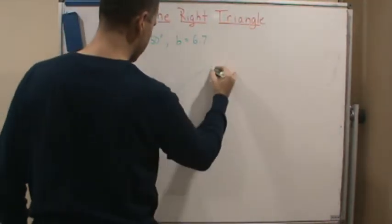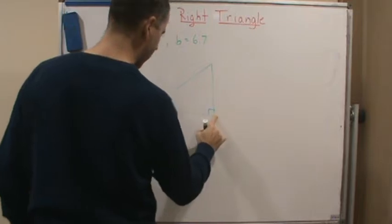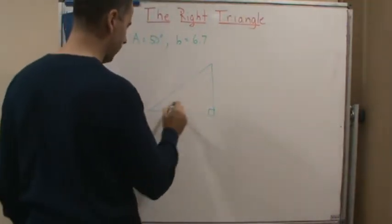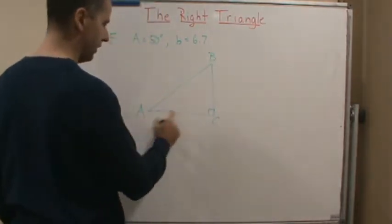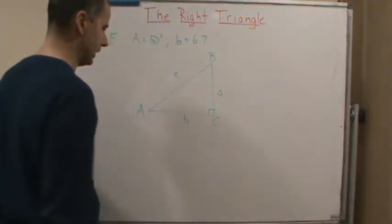Doesn't matter, doesn't have to look pretty. Okay, just sketch our triangle and label the results. So again, it doesn't matter, A, B, C, and then this is A, B, C.